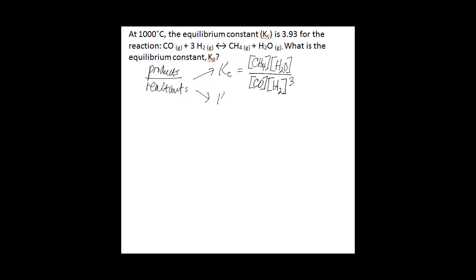The difference with Kp is that we're not dealing with molar concentrations — we're dealing instead with partial pressures. So in this case, you'd still have products over reactants, but it would be the partial pressure of methane gas multiplied by the partial pressure of water as a gas, divided by the partial pressure of carbon monoxide gas multiplied by the partial pressure of hydrogen gas, and that last term is raised to the third power.